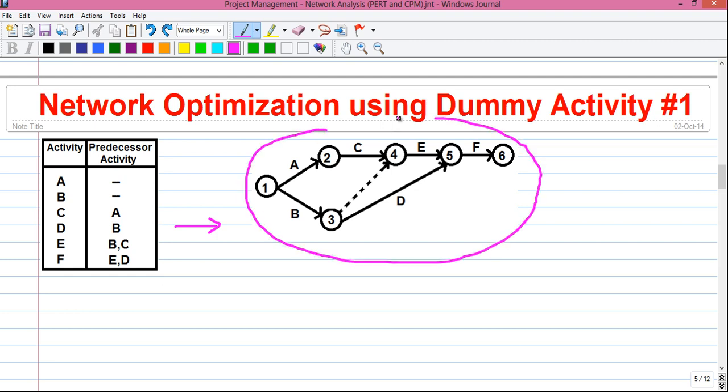First, do not look at this network. I will tell you how to draw it. So starting from the first activity that is activity A and next activity B. Both the activity A and B don't have any predecessor activity. That means they belong to the starting event or you can say they are the starting activities.